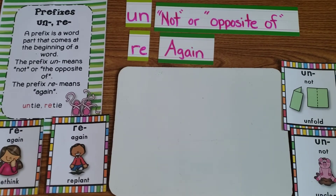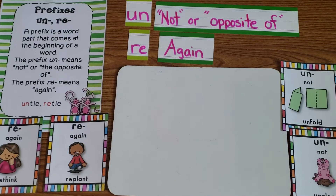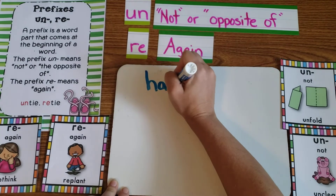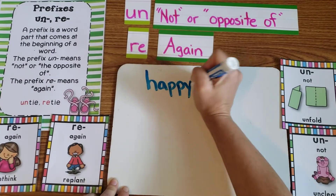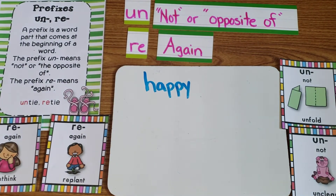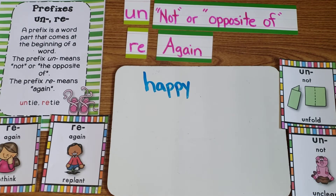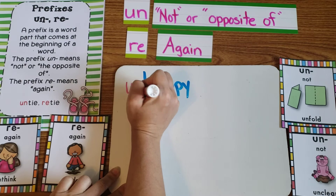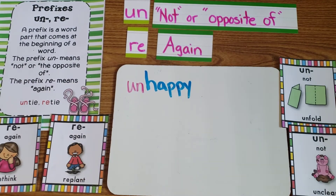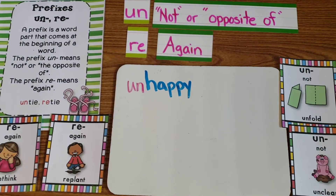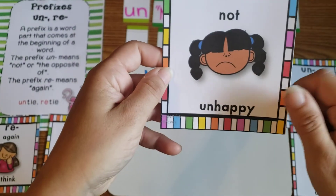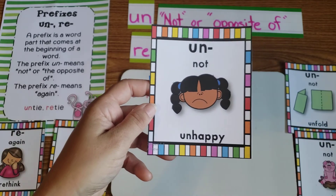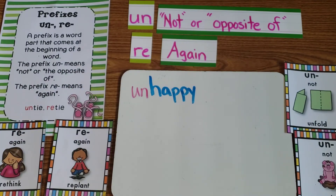Our spelling words this week include words you already know how to spell with a prefix added. We have the word 'happy,' and we're going to add the prefix 'un' to the beginning of it, so it doesn't mean happy — it means the opposite of happy. Unhappy. If you're not happy — she does not look happy — she's unhappy, she's sad.